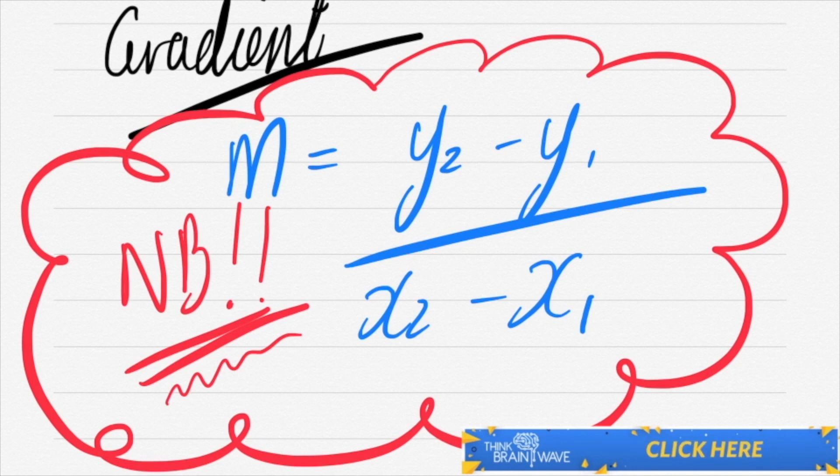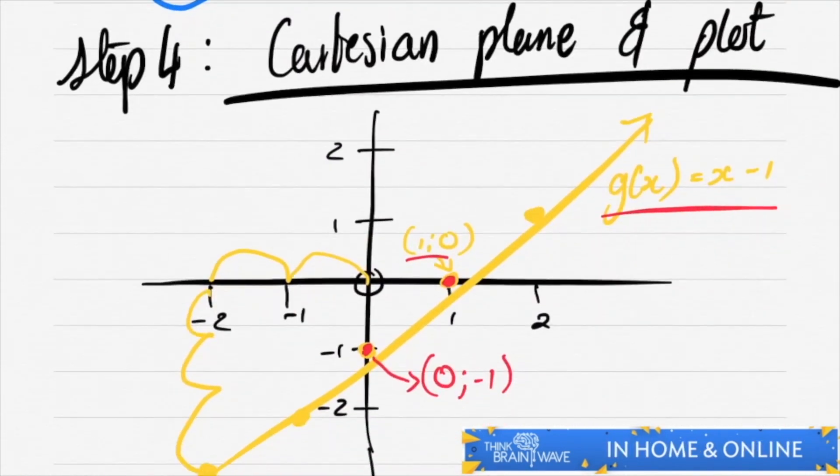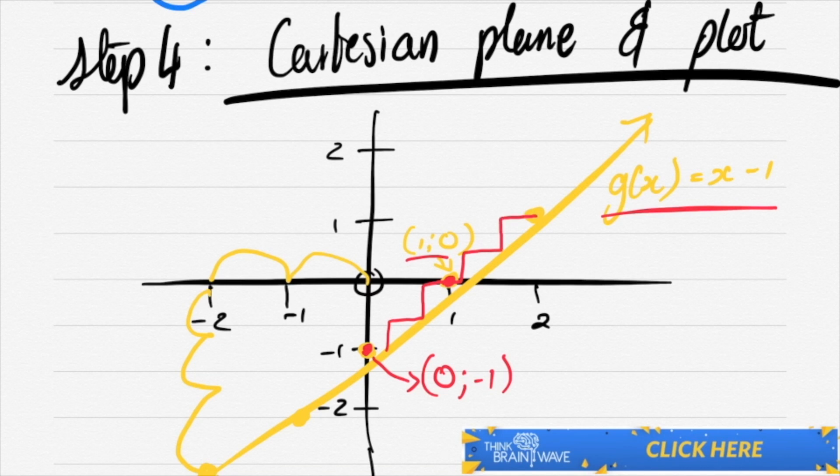So if you've got two points on a function, you've got the second point y minus the first point y over the second point x minus the first point x, and you'll find a gradient. The gradient is the step structure that looks like this between points.